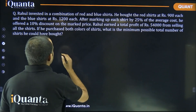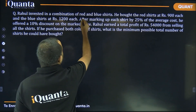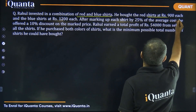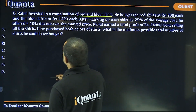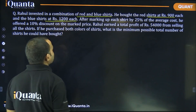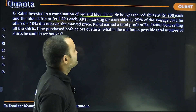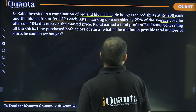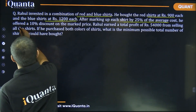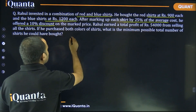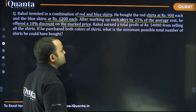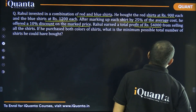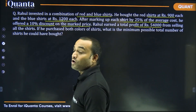The question says: Rahul invested in a combination of red and blue shirts. He bought red shirts at 900 rupees each and blue shirts at 1200 rupees each. After marking up each shirt by 25% of the average cost, he offered a 10% discount on the mark price. Rahul earned a total profit of 54,000 rupees from selling all the shirts.